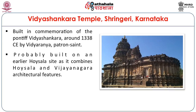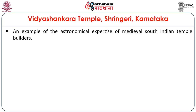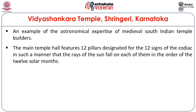The Vidya Shankar temple at Shringeri, Karnataka. Acharya Vidyaranya was responsible for building this kingdom, so a temple was dedicated to him at Shringeri. Built around 1338, it was probably constructed on an earlier Hoysala site as it combines both the Vesara style and Dravidian style architectural features. This temple is also a fine example of the astronomical expertise of medieval South Indian temple builders — the Sthapatis. The main temple hall features 12 pillars designated to 12 zodiac signs, such that the rays of the sun fall on each of them in the order the months go.